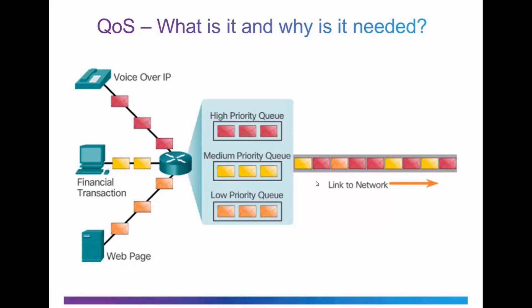In this diagram, we're given a general concept of how QoS works. Packets are buffered at the router and three priority queues have been established: a high priority queue, a medium priority queue, and a low priority queue. Voice over IP traffic in the high priority queue is given higher priority, so more of those packets are forwarded across the network. Financial transactions, which are also time-sensitive, are given greater priority as well. Any leftover bandwidth is used for the static web page in the low priority queue.